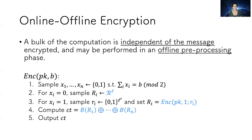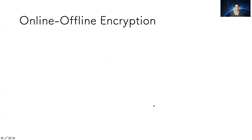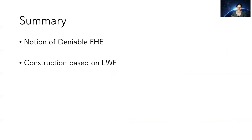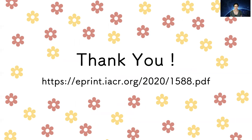We also have offline-online encryption. In the preprocessing phase, select n-1 bits, and then when we receive the message B, set the last bit according to the message being encrypted and do the rest. In summary, we presented the notion of Deniable FHE and gave a construction based on LWE. Thank you very much — the paper is available online.